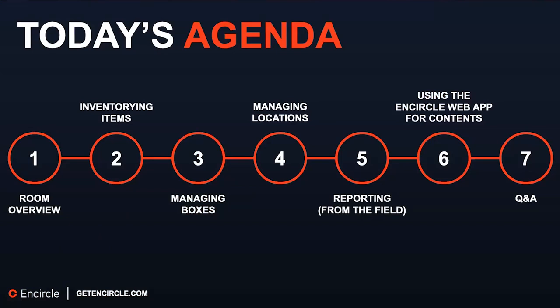Before I dive right in, I want to run through our agenda quickly so you know what we're covering today. We're going to start at the beginning of the process — I'll show you how to do room overview work in the mobile app, then how to inventory your items, which is where we'll spend most of our time. I'll talk about boxes and locations for packout purposes, show you how to run reports from the field, and then finish by showing how to use the Encircle web app for contents. We'll finish with a Q&A.